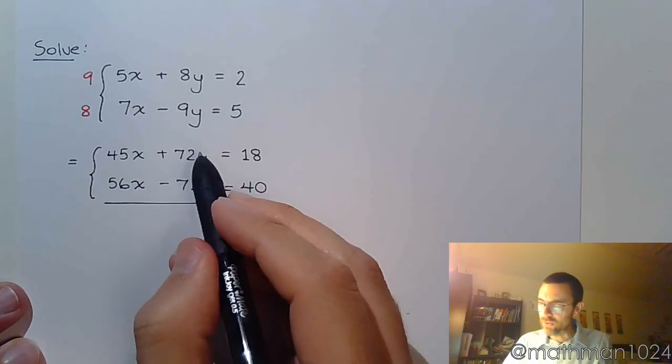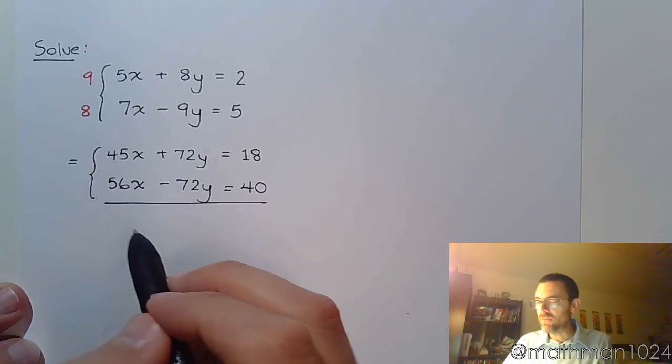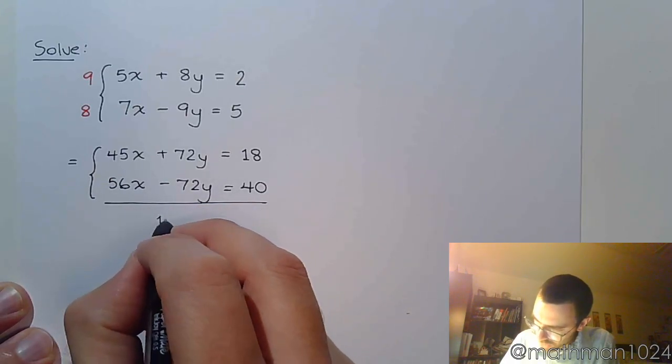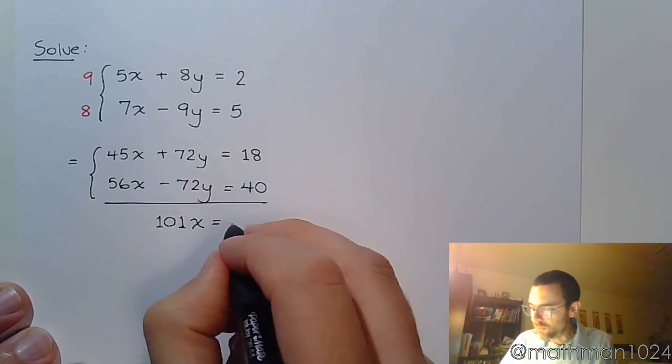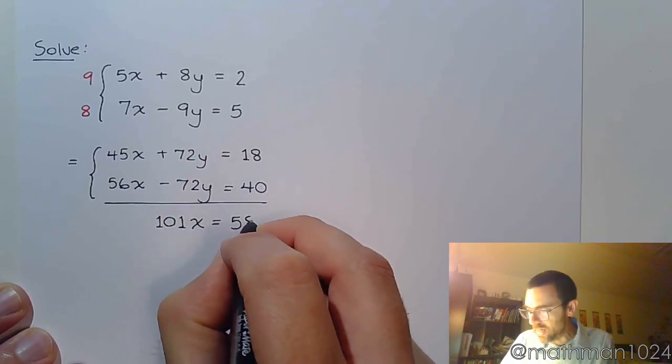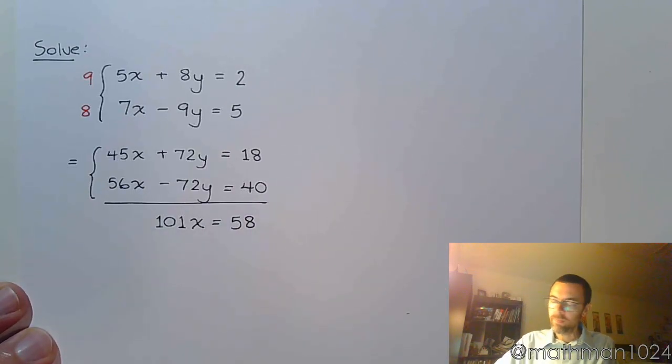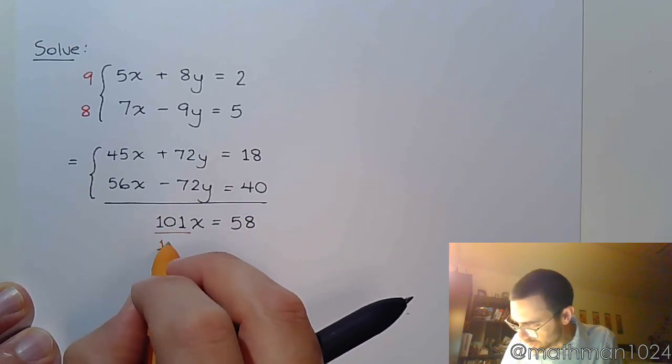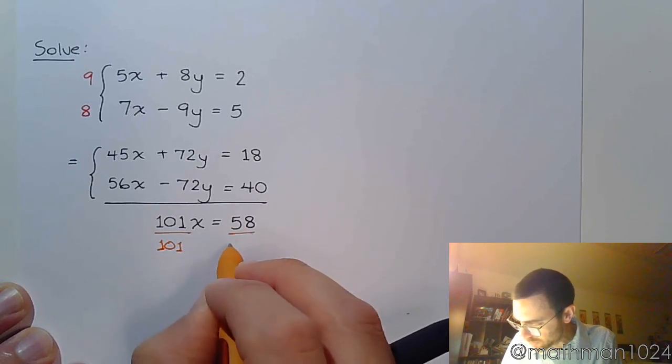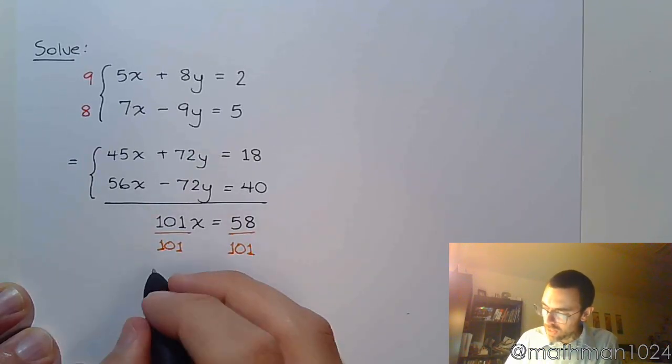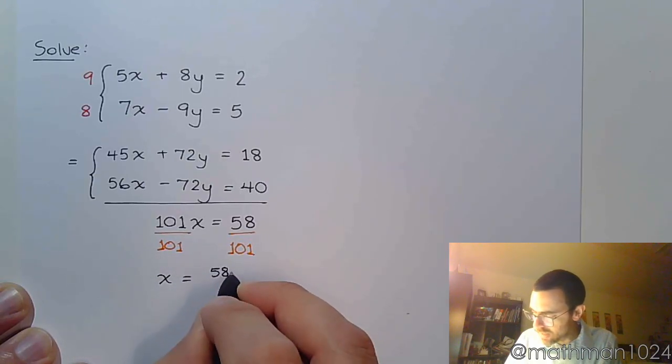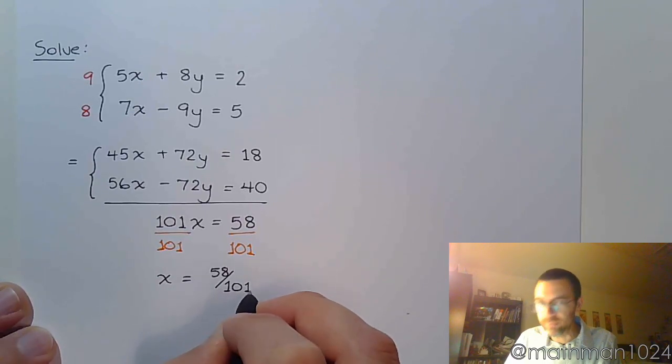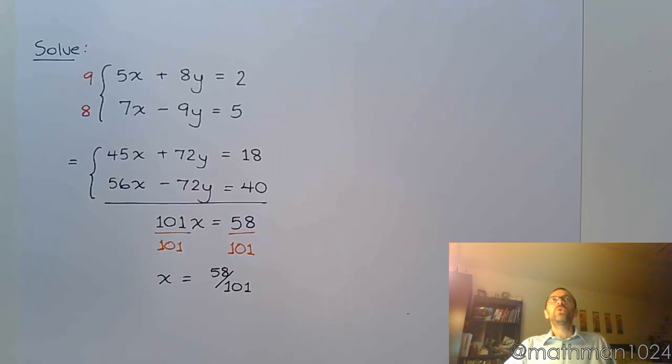When I combine everything here on the left, those y's are going to go away. 45x and 56x is 101x. 18 and 40 is 58. And then divide both sides by the coefficient. And we have 58 over 101.